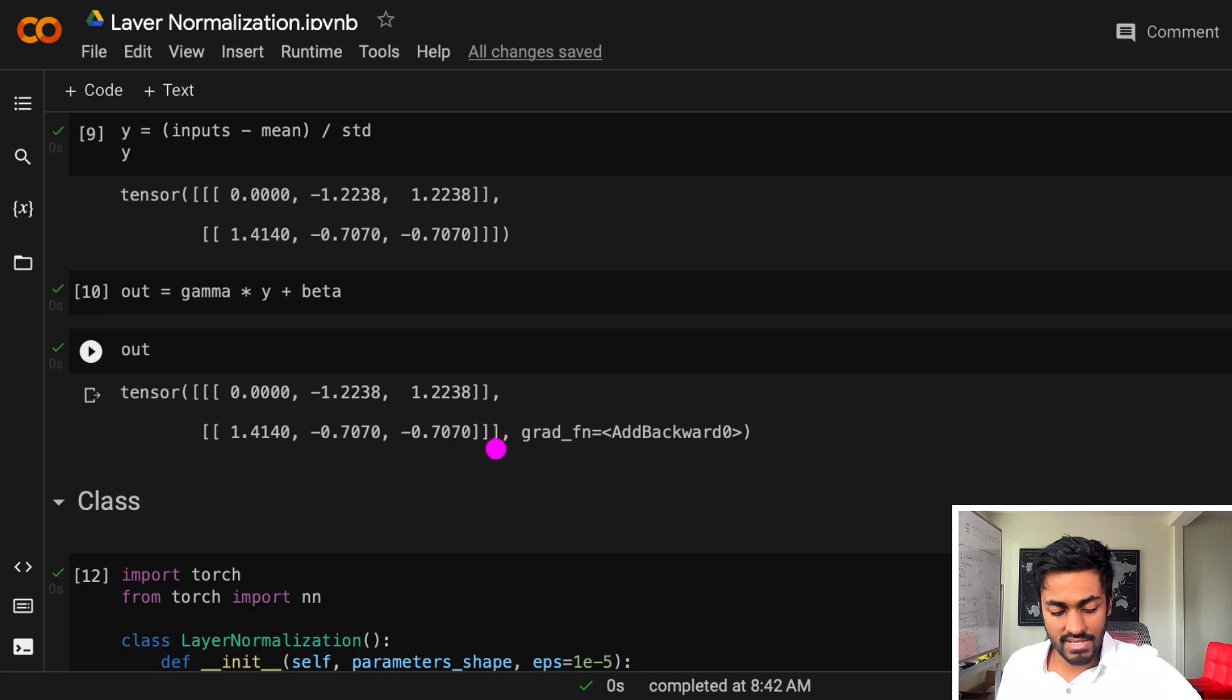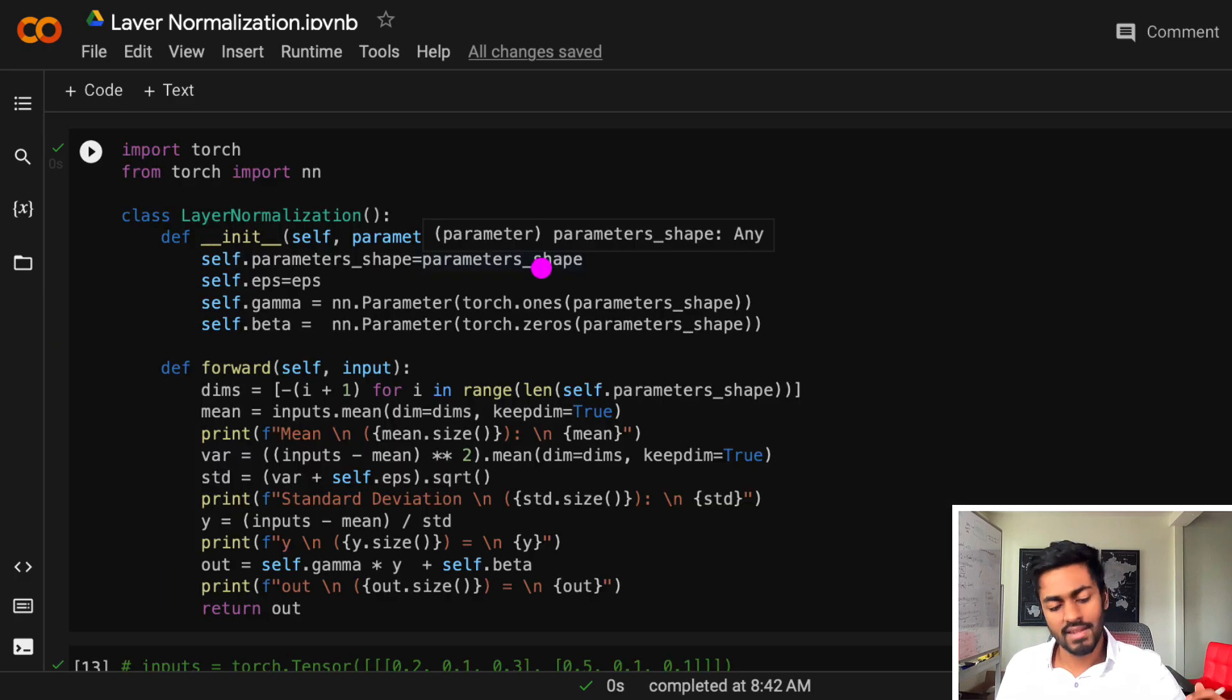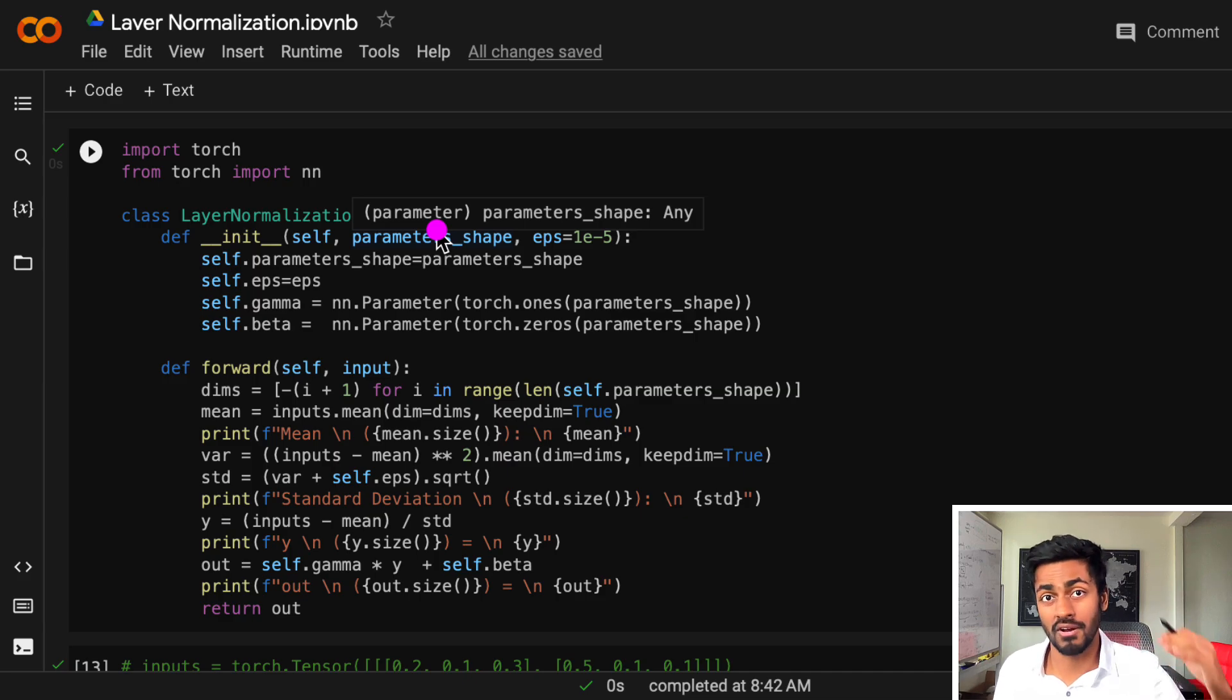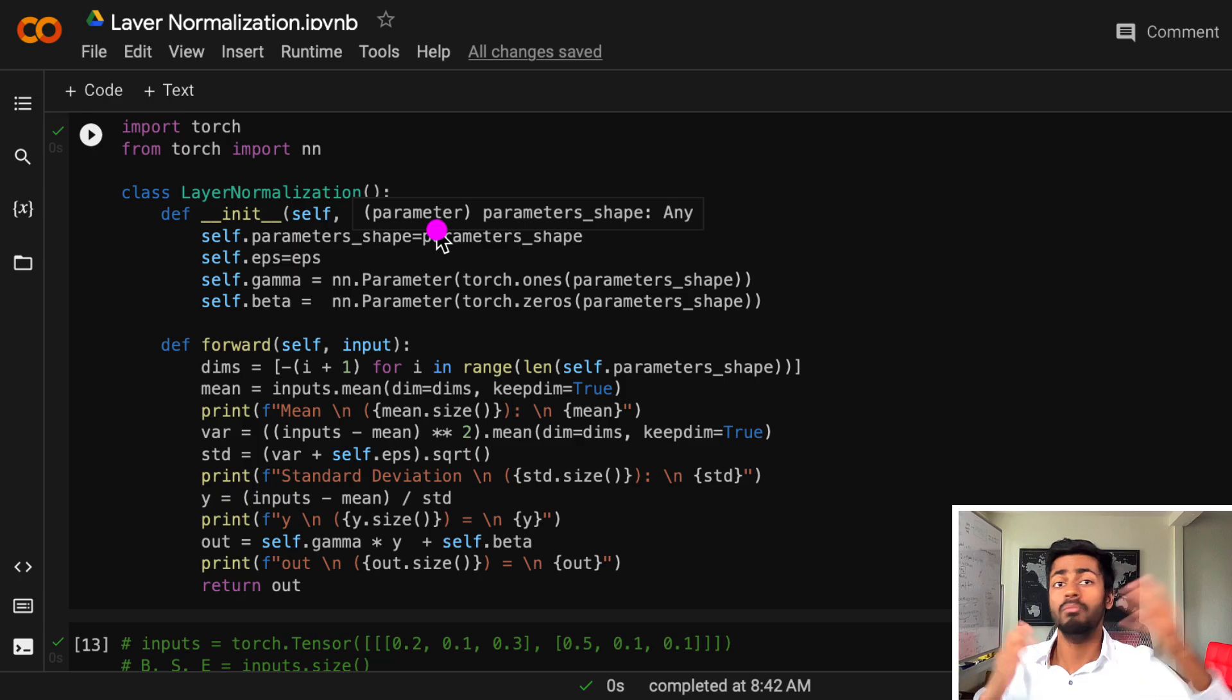In this case, gamma and beta, which are going to be updating during the actual backpropagation phase. Now, everything that I've just discussed is going to be in this little class called layer normalization, where we have a constructor that takes parameter shape. This is the dimensions along which we actually want to perform layer normalization. It could be just the last one like we worked out by hand, or the last two that we just saw in the execution above. Or even more if we wanted to. It's just a generalized function.